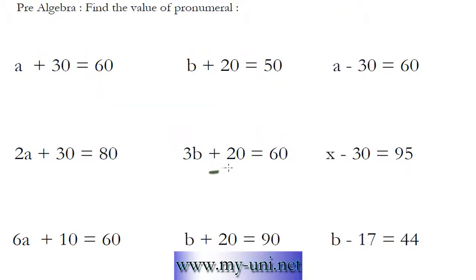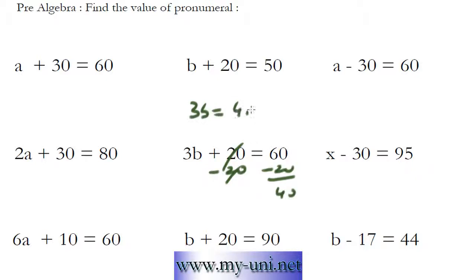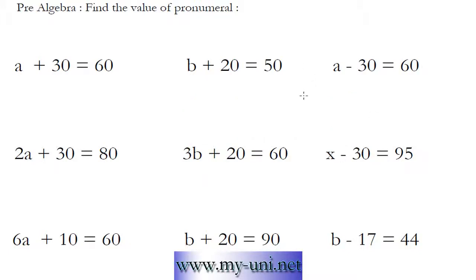We can subtract 20 from both sides of the equation to get rid of this number here. 3B is equal to 60 minus 20, which is equal to 40. Now we have to get rid of 3. We can divide both sides of the equation by 3. So 3 will cross off. B is equal to 40 over 3.